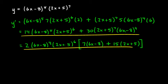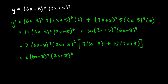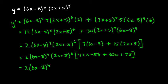Keeping the common factors out front, we multiply out the remaining bracket: 7 times 6x is 42x, and 7 times negative 8 is negative 56; 15 times 2x is 30x, and 15 times 5 is 75. So we have 2 times (6x minus 8) to the fourth times (2x plus 5) to the sixth times (42x minus 56 plus 30x plus 75).